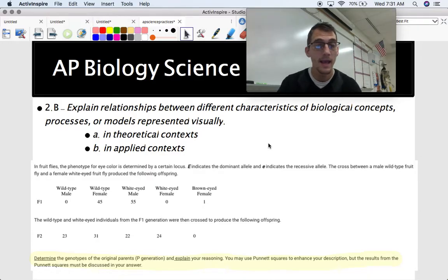Here's 2.B as a FRQ. So once again, we have a data table. And this is a theoretical or applied context. So these are the results of a genetic cross. And again, explaining relationships between different characteristics, models represented visually, and here's our visual representation. So we would be asking for this question, determine the genotypes of the parents and explain your reasoning. You may use Punnett squares to enhance your description, but the results from the Punnett squares must be discussed in your answer. Something that's very important, if you don't already know this, is that for FRQ questions, you actually have to write in complete sentences.